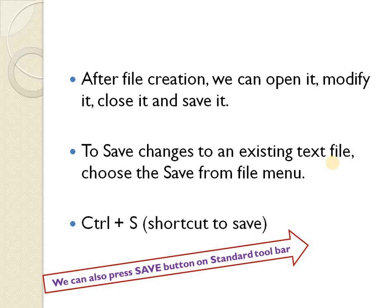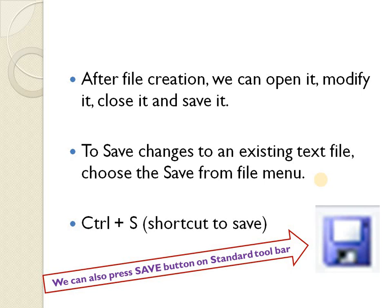To save changes to an existing file, once you have already saved and named your file, if there are further modifications, you do not need to click Save As again. Instead, click on File and then click Save. The shortcut is Control + S. There is also a floppy disk icon button on the standard toolbar that you can click. So we have three options: click File then Save, press Control + S, or click the save icon on the standard toolbar — any of these will save the modifications to the file.